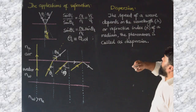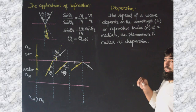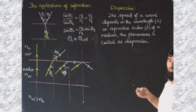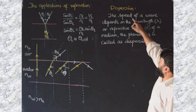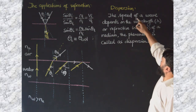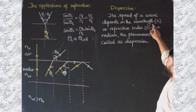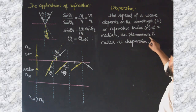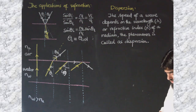Dispersion is a phenomenon in which light disperses into its individual wavelengths. We define this phenomenon as when the speed of a wave depends on the wavelength of a wave or refractive index of a medium, then the phenomenon is called dispersion.